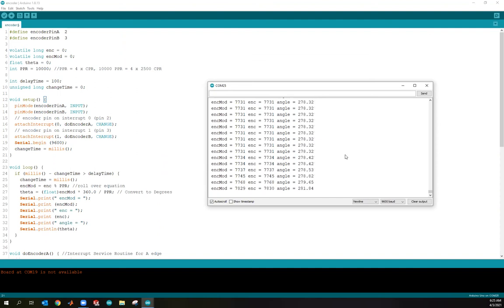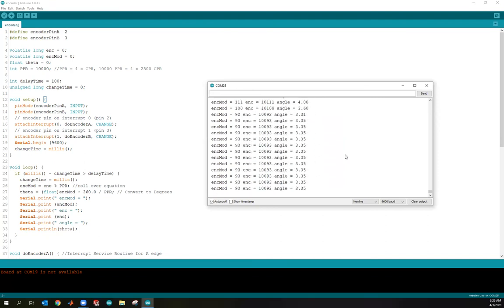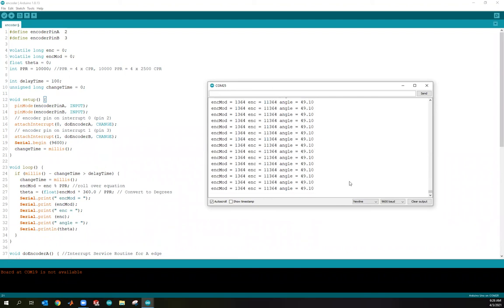Now watch what happens as I transition closer to 10,000 and beyond. I'm getting closer to 360 degrees, and after I pass 360, everything rolls over. Even though the encoder went past 10,000, encoder mod went and rolled over, and now the angle is 49 degrees. So I hope this helps you understand how an incremental encoder works with a little demo here.